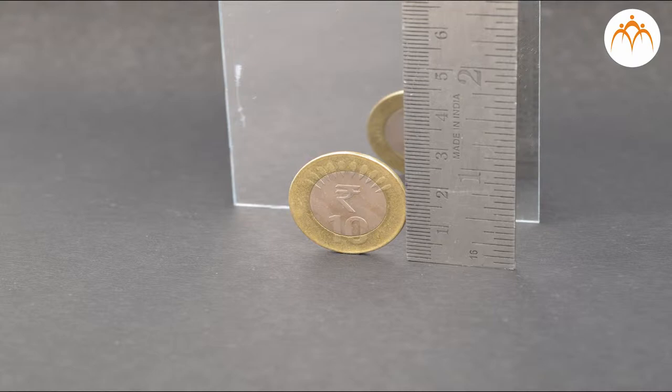in front of a plain mirror, the image of the coin has a diameter of 27 mm when viewed from the point very close to the real coin.